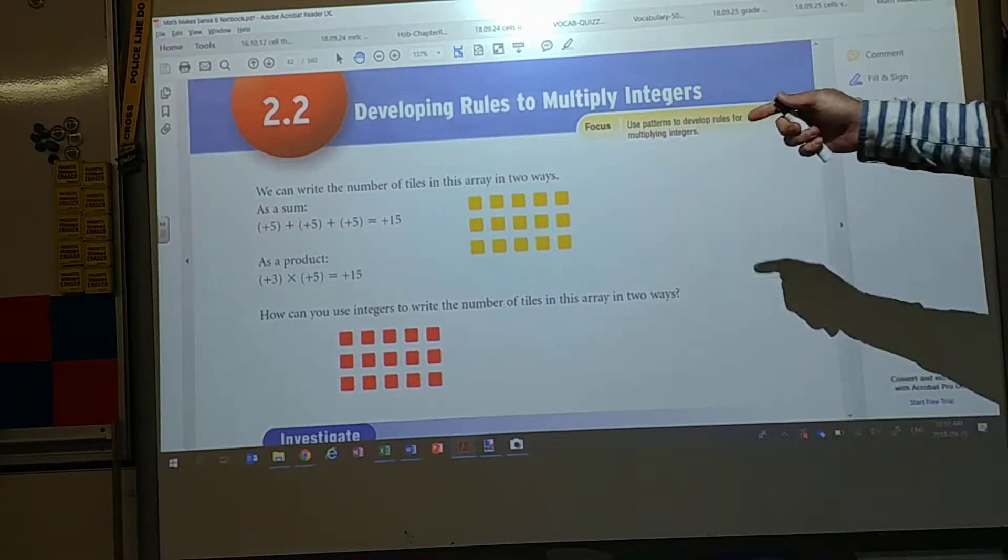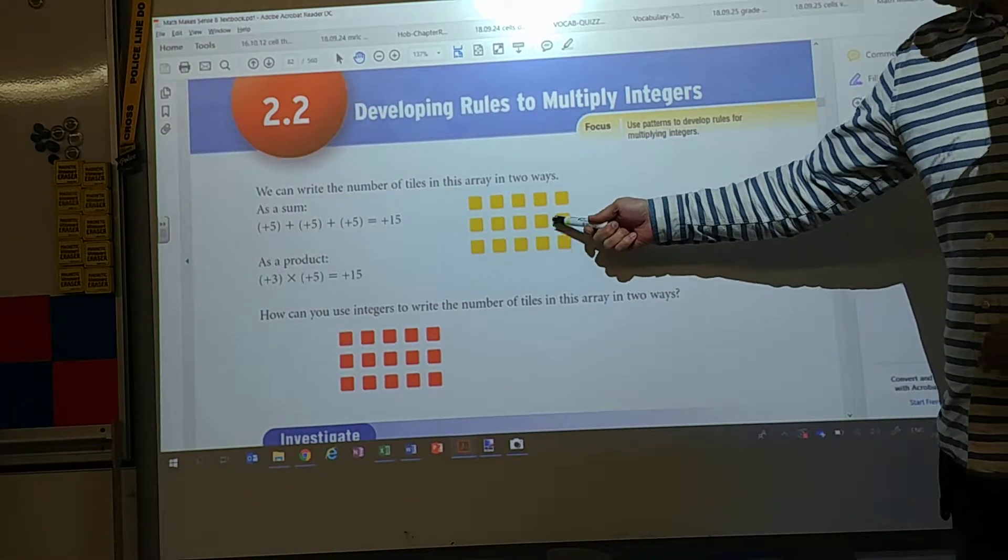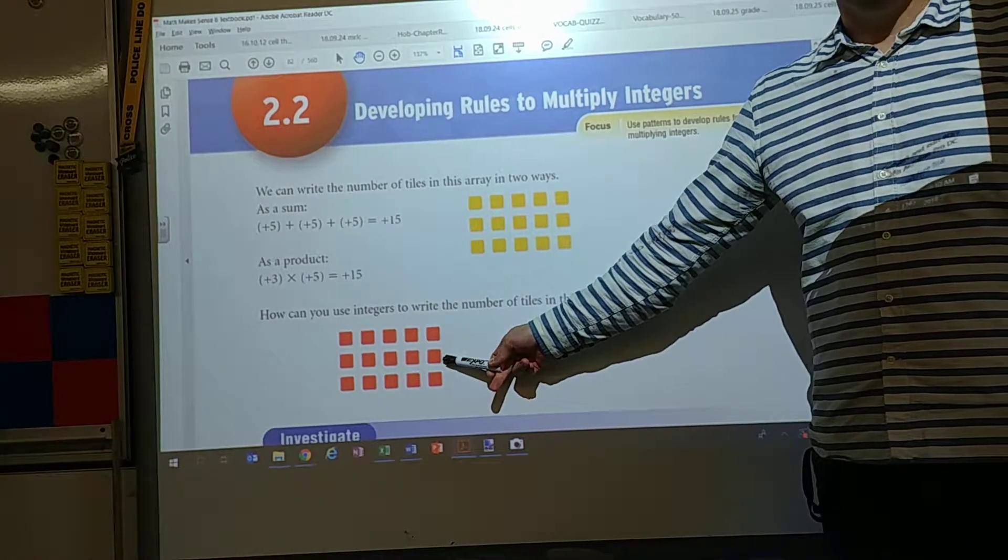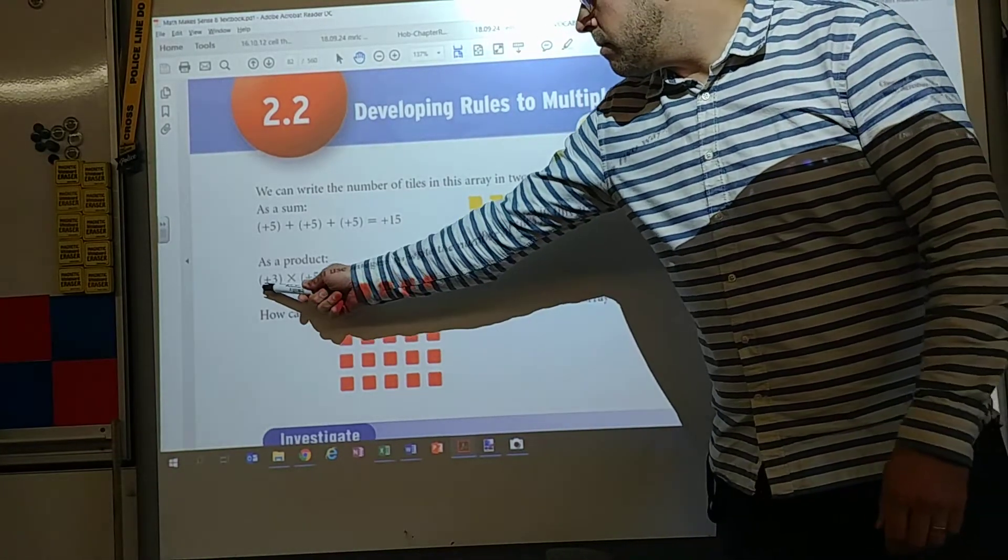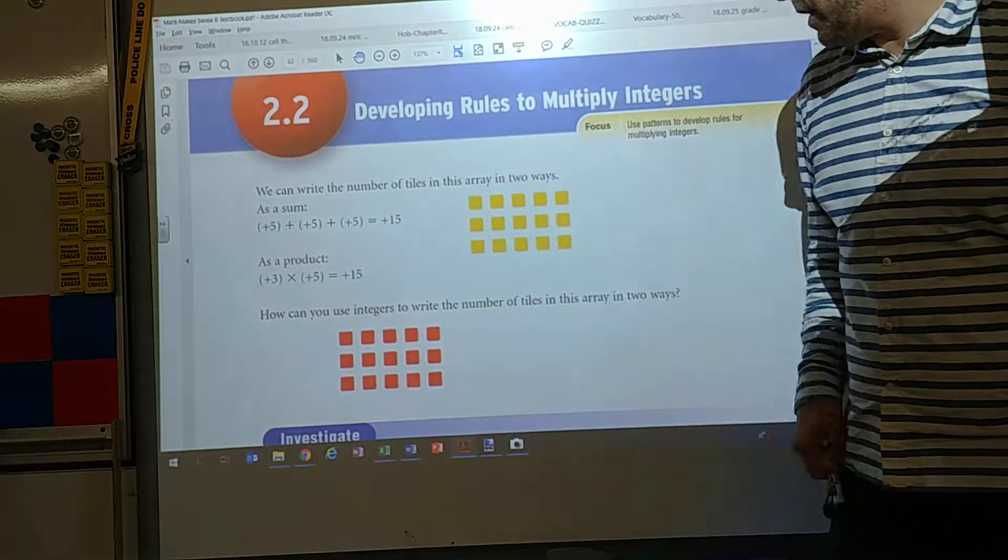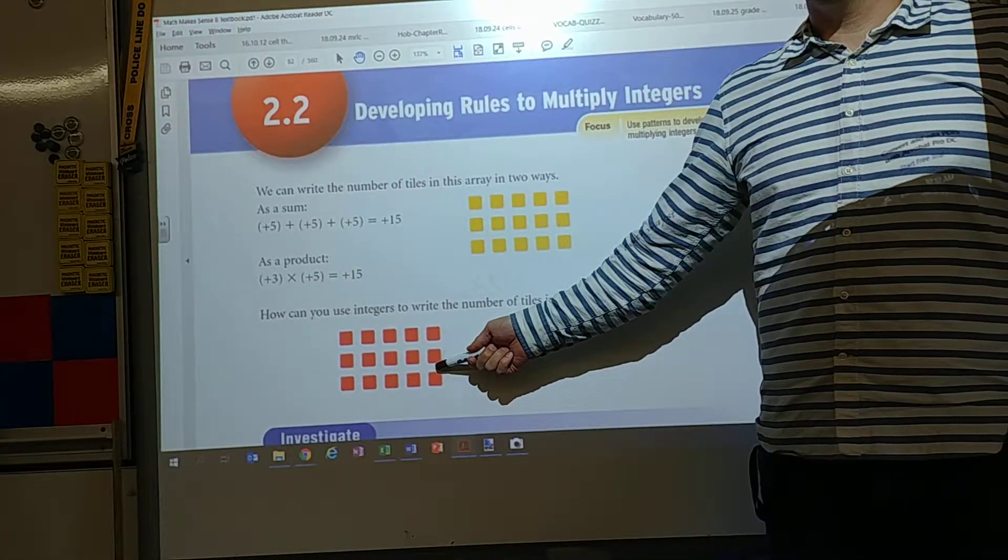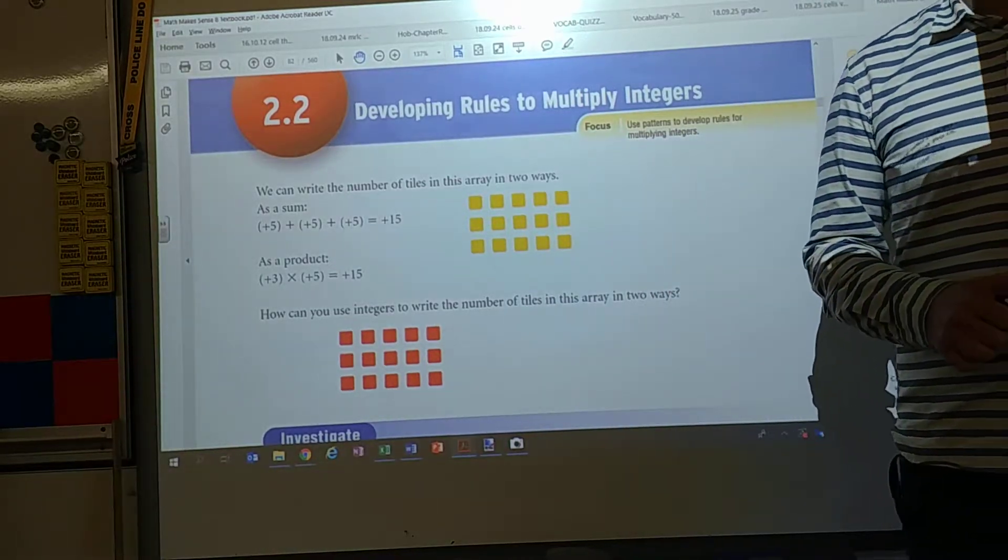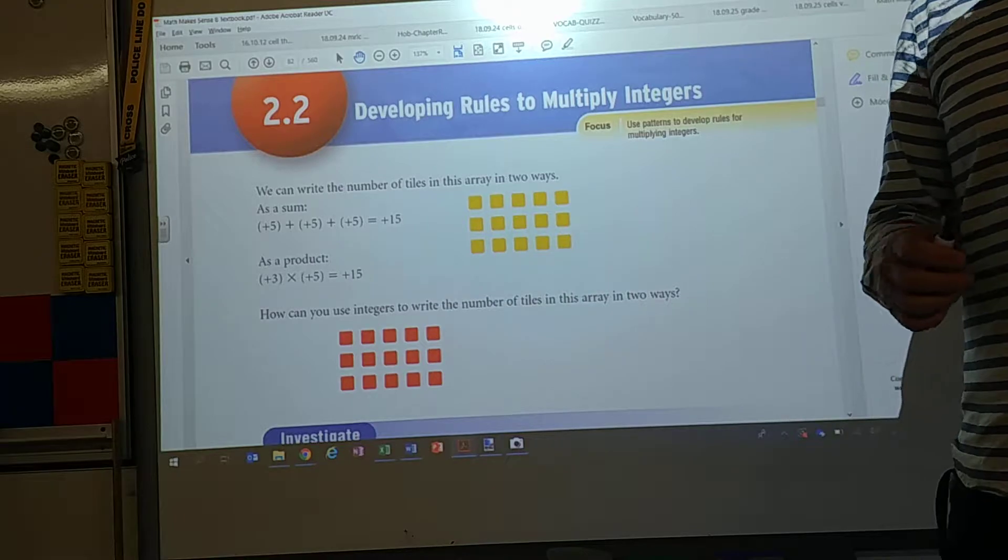But what we're going to look at is a couple of models. Now we already did. We modeled this way. But then look what they did here. Positive 3 times positive 5. 50. What is being modeled here? It's being modeled here. Negative.